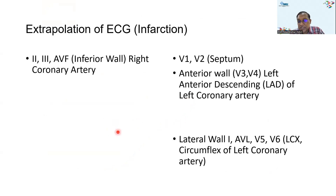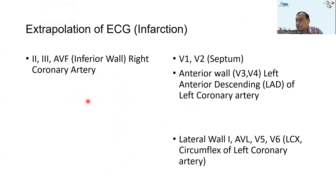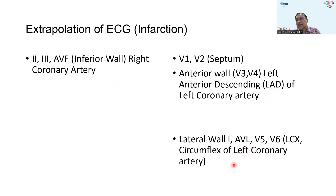For ECG correlation: many arteries supply different walls of the heart, and certain walls are more commonly affected clinically by infarction. If someone has a heart attack with inferior wall infarction showing ST elevation in leads II, III, and aVF, we understand there is obstruction in the right coronary artery. If the septum (V1, V2) or anterior wall (V3, V4) is affected, there is blockage of the LAD. If the lateral wall (V5, V6, aVL, lead I) is affected, the circumflex branch is implicated.